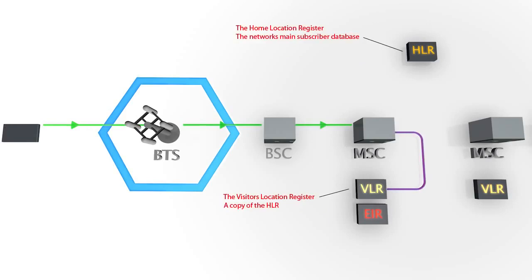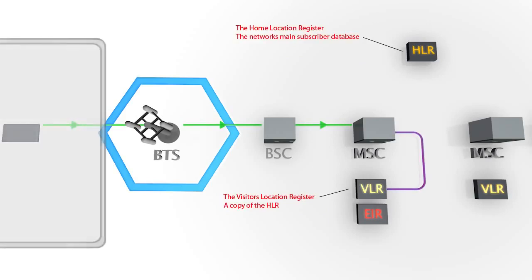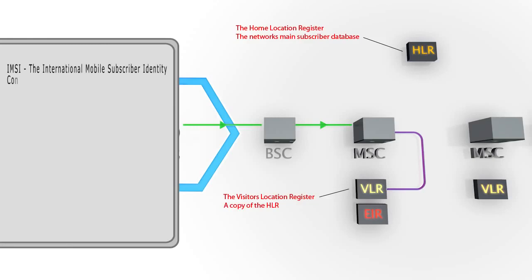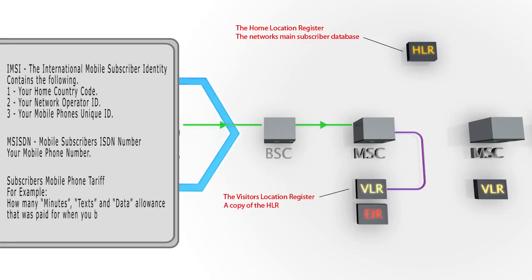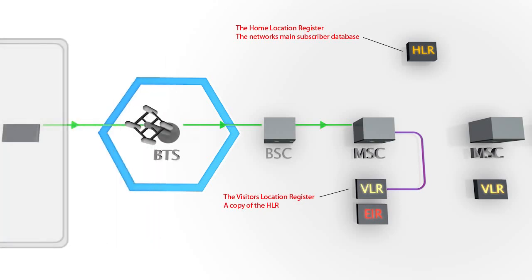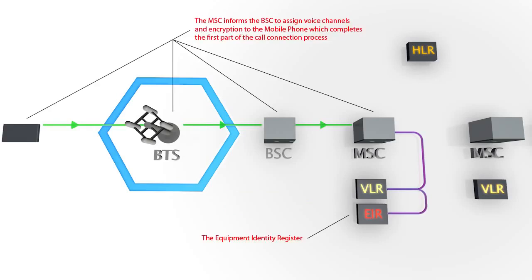On arrival, our call is put on hold while the subscriber's details are validated using two databases. The VLR can be seen as a copy of the main HLR database, containing the IMSI, MSISDN, and subscription details of users currently using that particular MSC's services. The MSC then examines the EIR database to see if the device has been stolen or cloned.